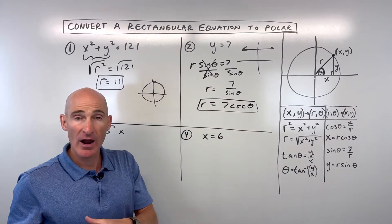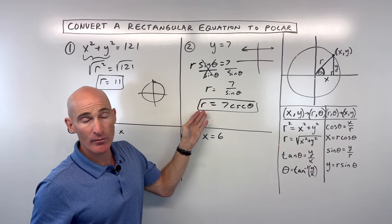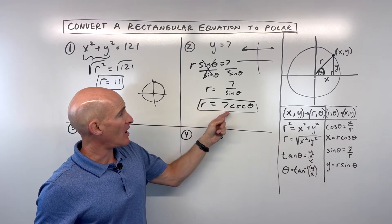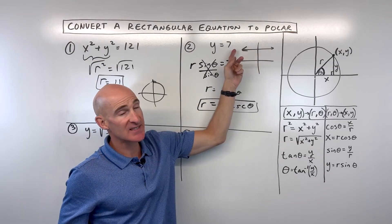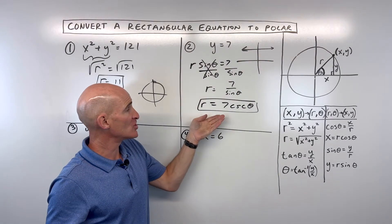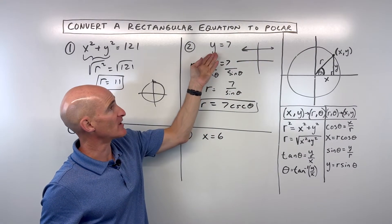So this actually can condense down a little bit further to 7 times the cosecant of theta. If you were to graph this on your graphing calculator, r equals 7 over sine theta or 7 cosecant theta, you'll see that you get the same horizontal line, just a different form. This is polar, this is rectangular.